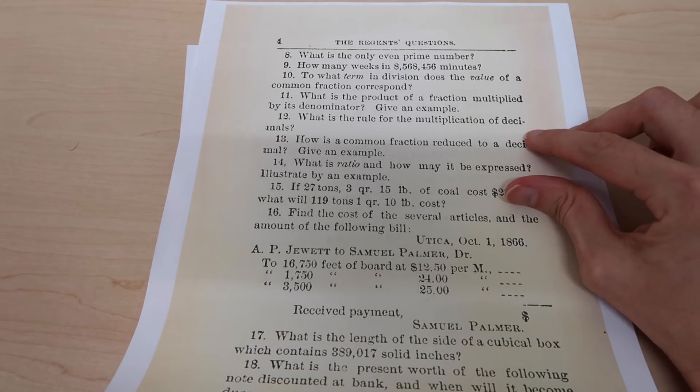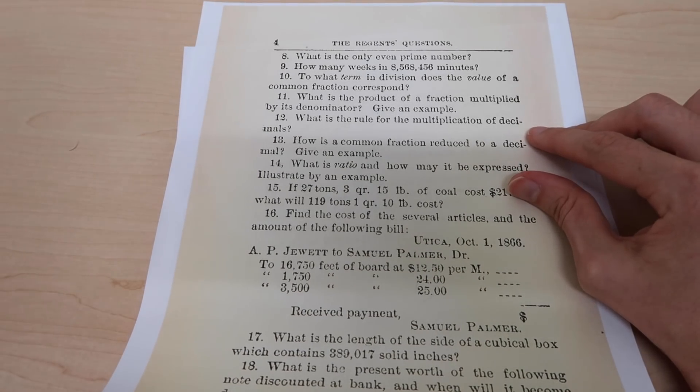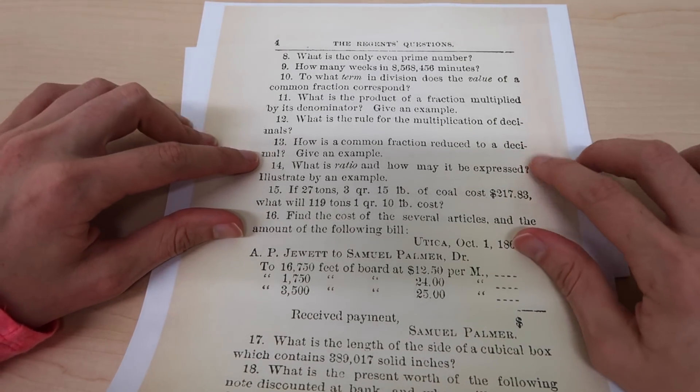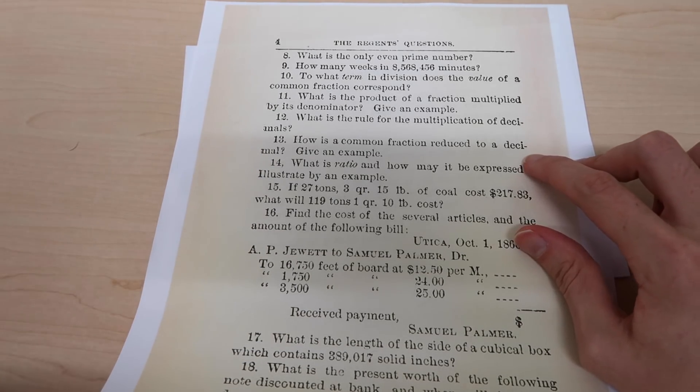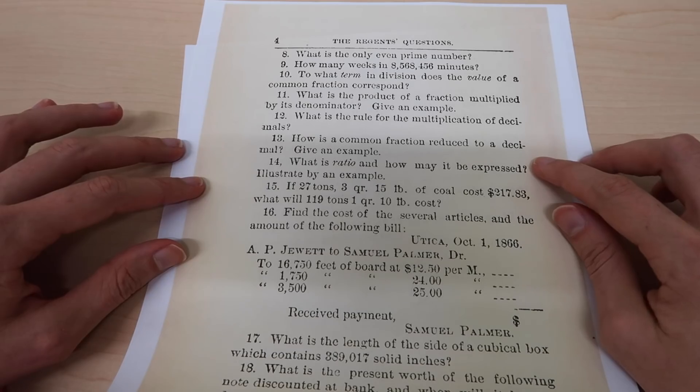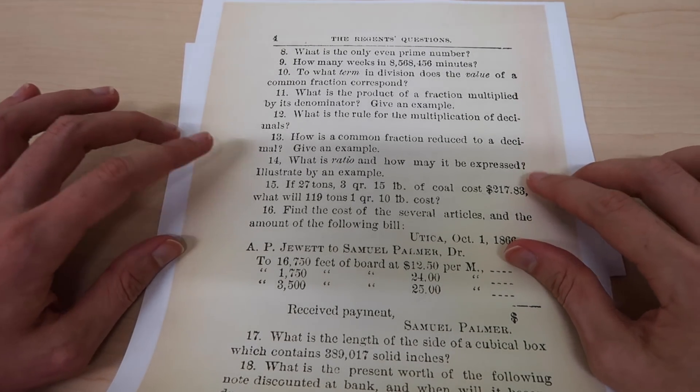Number 12: what is the rule for the multiplication of decimals? Now this one hasn't been outdated, this rule still applies. The rule is that the decimal point is placed in the product so that the number of decimal places in the product is the sum of decimal places in what you're multiplying together. So for example, if you're multiplying a number with two decimal places by a number with one decimal place, your answer will have to have three decimal places in it. That's still something that I remember doing in school. Number 13: how is a common fraction reduced to a decimal? I guess to convert a fraction to a decimal, what you're doing is you're dividing the numerator by the denominator, so I guess that's all you can do, maybe by long division.